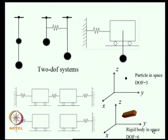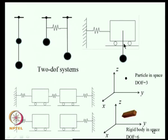A double pendulum is a 2-degree-of-freedom system using angles θ₁ and θ₂. Another 2-DOF example is a combination of a mass-spring system and a pendulum - this type of model is encountered in modeling sloshing of liquids in flexible tanks, a topic we may return to in this course.